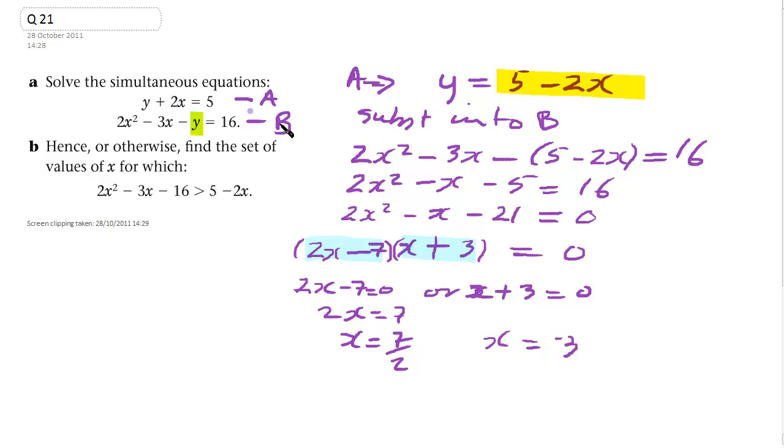Now, put that back into the equation up here. We've got y equals 5 minus 2x, so we can find y when x is 7 over 2. 2 times 7 over 2 will just give us 7. So 5 minus 7 will give us minus 2.